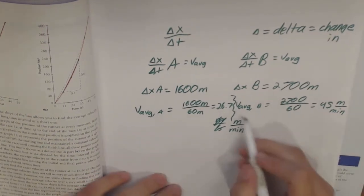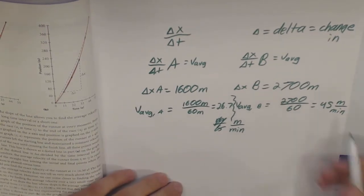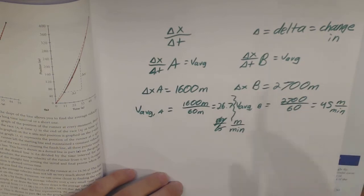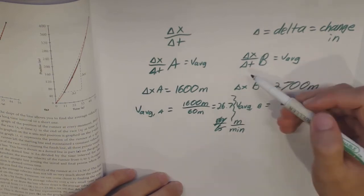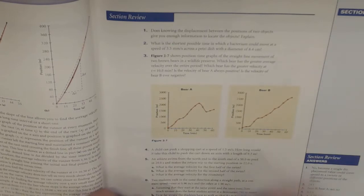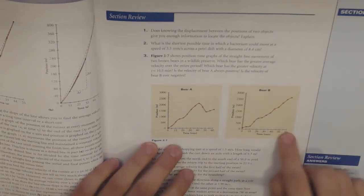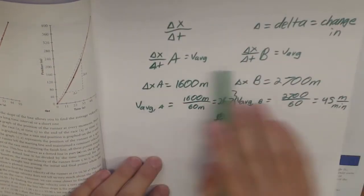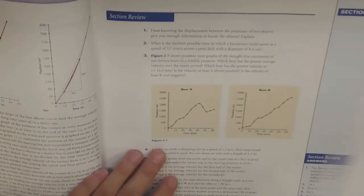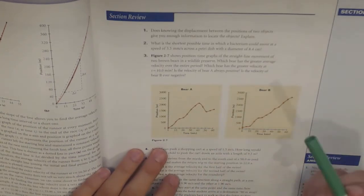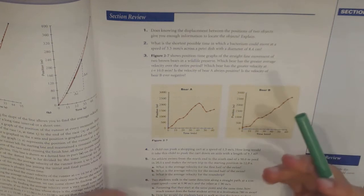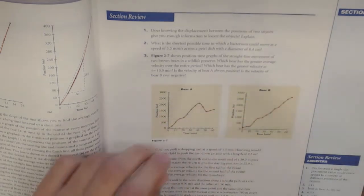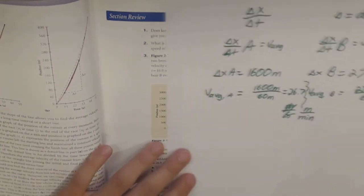The average velocity for bear B is greater — 45 versus 26.7 — because he traveled more distance. His change in distance over change in time was greater. But there's an easier way: since both bears took 60 minutes, the delta T is the same, so we can just compare the change in position. Bear A is 1,600, bear B is 2,700 — bear B has the greater average velocity.